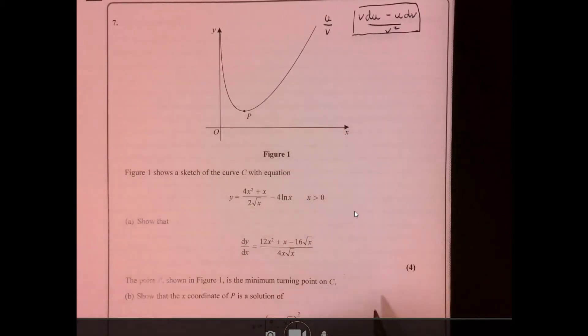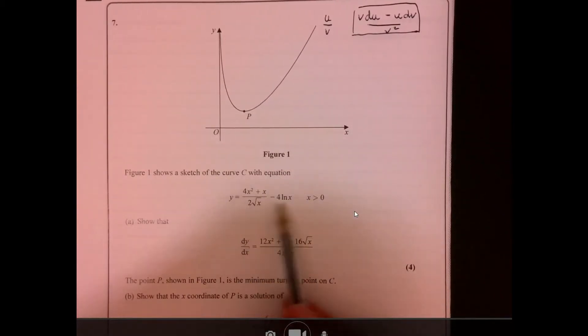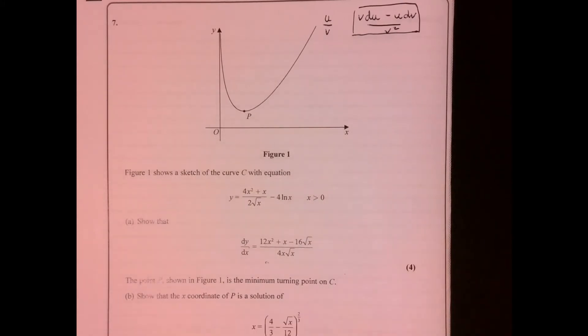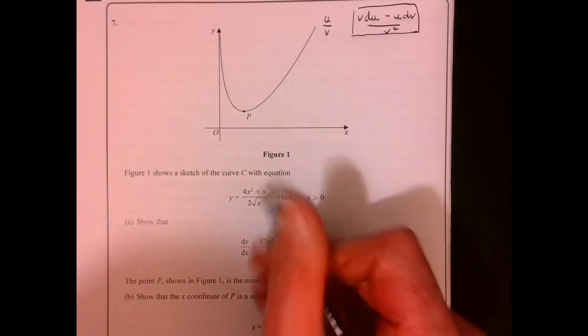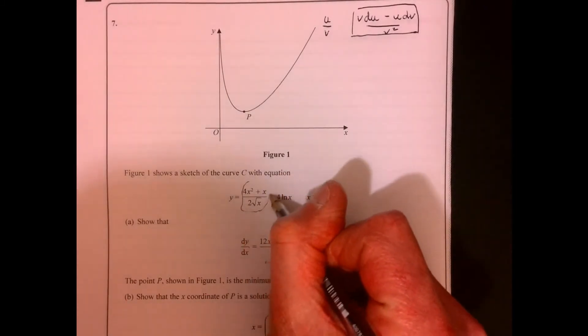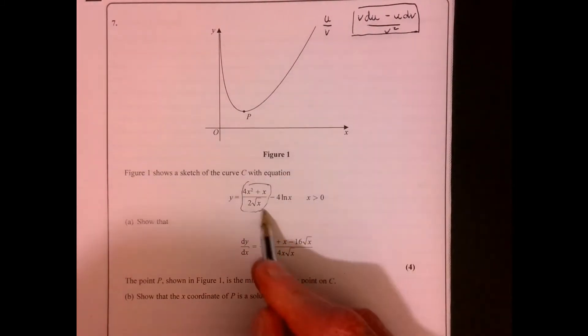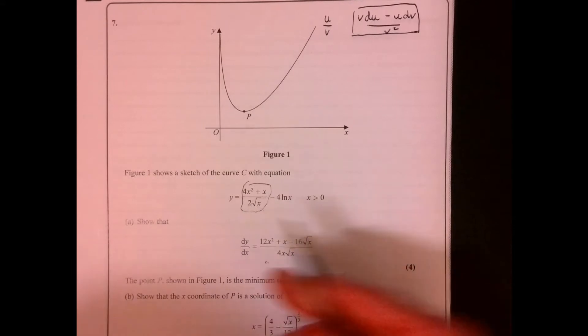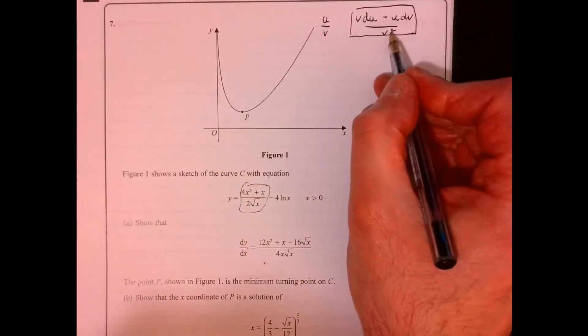Question 7. So what's going on with this question? First thing we need to do is differentiate just here. The main bit of it is quotient rule. Let's just do this bit first of all. I've just jotted down quotient rule here.